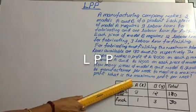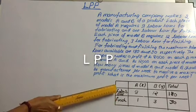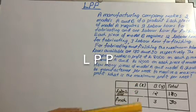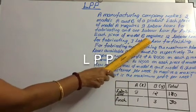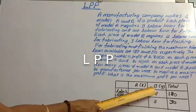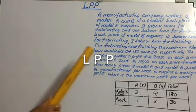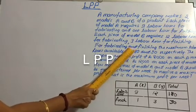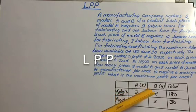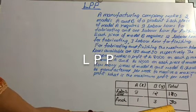If we consider model A, it requires 9 fabricating hours and 1 finishing hour. Similarly, model B requires 12 fabricating hours and 3 finishing hours. It is also given that the maximum hours available are 180 for fabricating and 30 for finishing. So the total fabricating hours must be less than or equal to 180, and finishing hours must be less than or equal to 30.